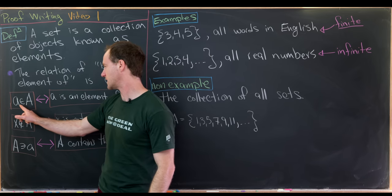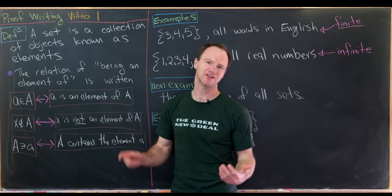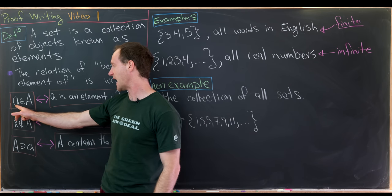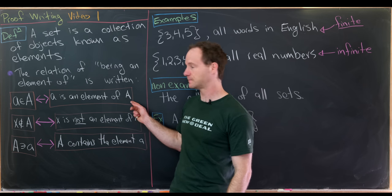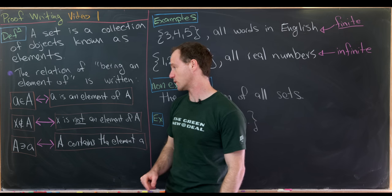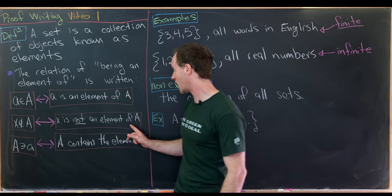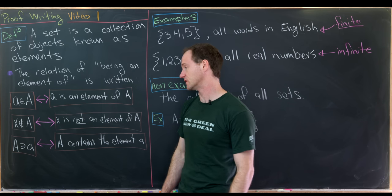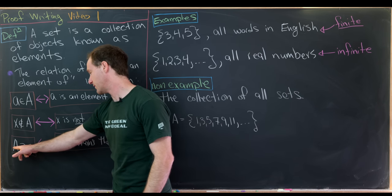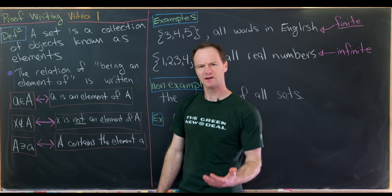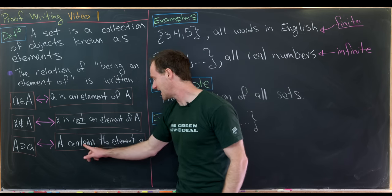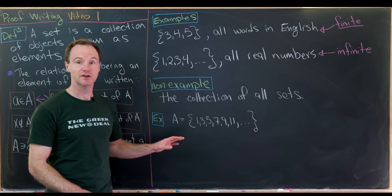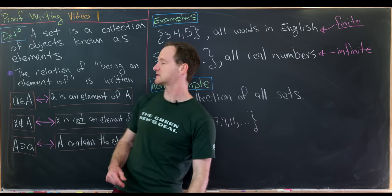That shorthand is this symbol here — it's kind of like an E, and I call it the element symbol. So we would say 'a is an element of capital A.' You can also negate this statement: 'x is not an element of the set capital A.' This symbol can also be written in any direction. So 'A contains the element little a' is read from left to right.